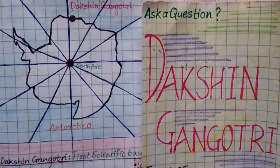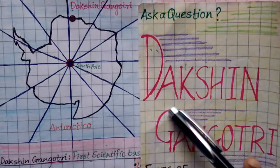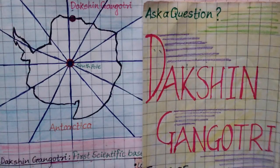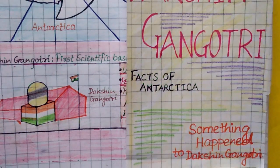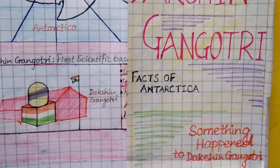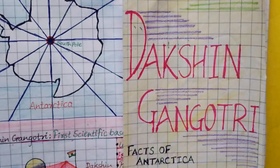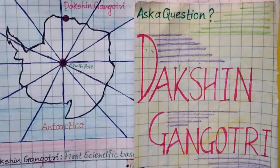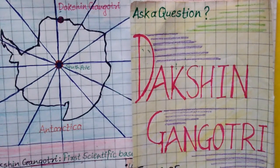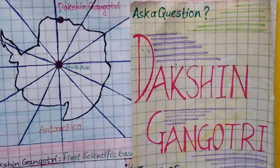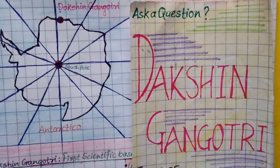Today I will cover an entire session about Dakshin Gangotri. I am not talking about the Gangotri in Uttarakhand from where the Bhagirathi river starts flowing — I am talking about the Dakshin Gangotri, which is a scientific base in Antarctic.